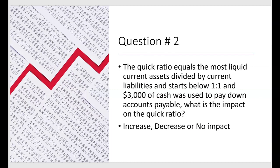You might be wondering: what if the ratio started below one to one? Now we'll look at the quick ratio, which equals the most liquid current assets divided by current liabilities. The quick ratio is going to start below one to one, and they tell us three thousand dollars of cash was used to pay down accounts payable. The journal entry is the same: debit accounts payable, credit cash. Cash is in the numerator and accounts payable is in the denominator, and both are going down by the same amount — three thousand dollars.